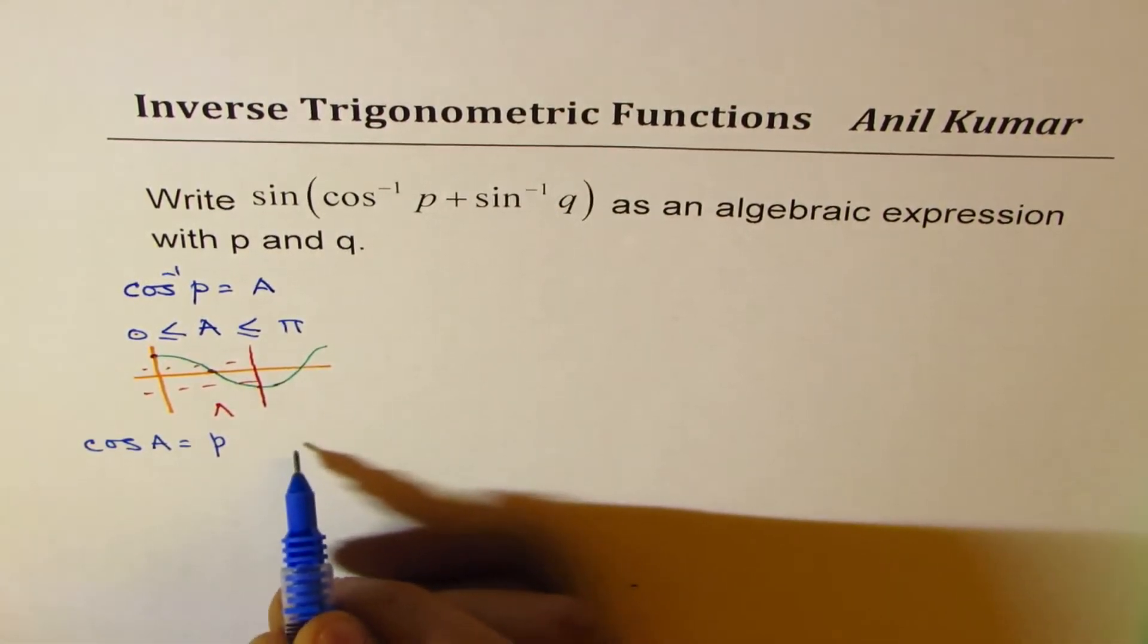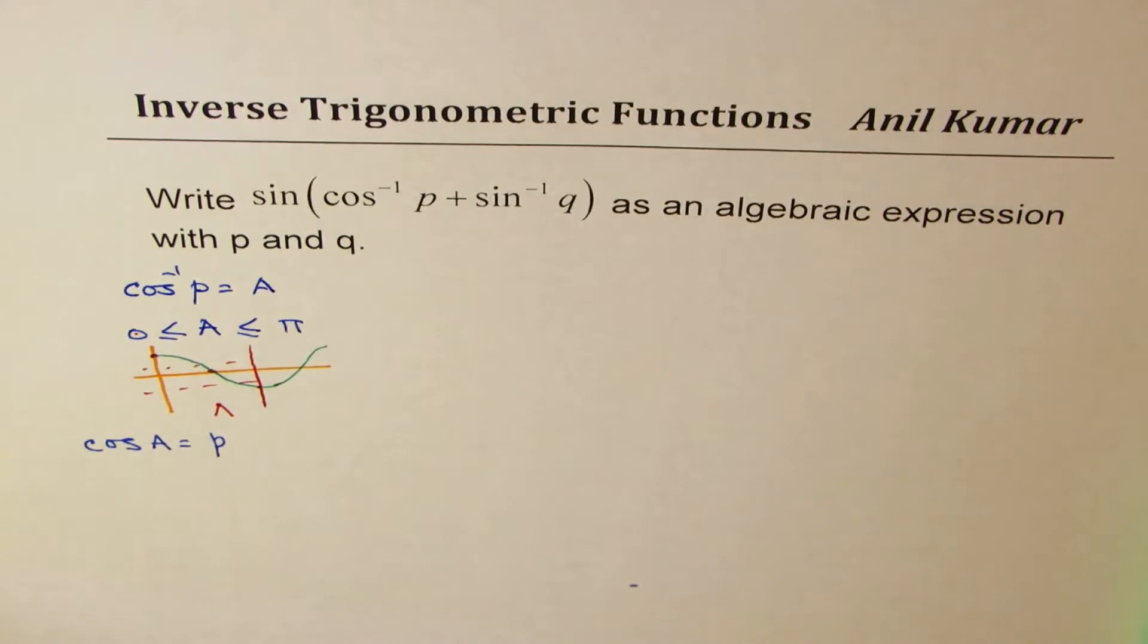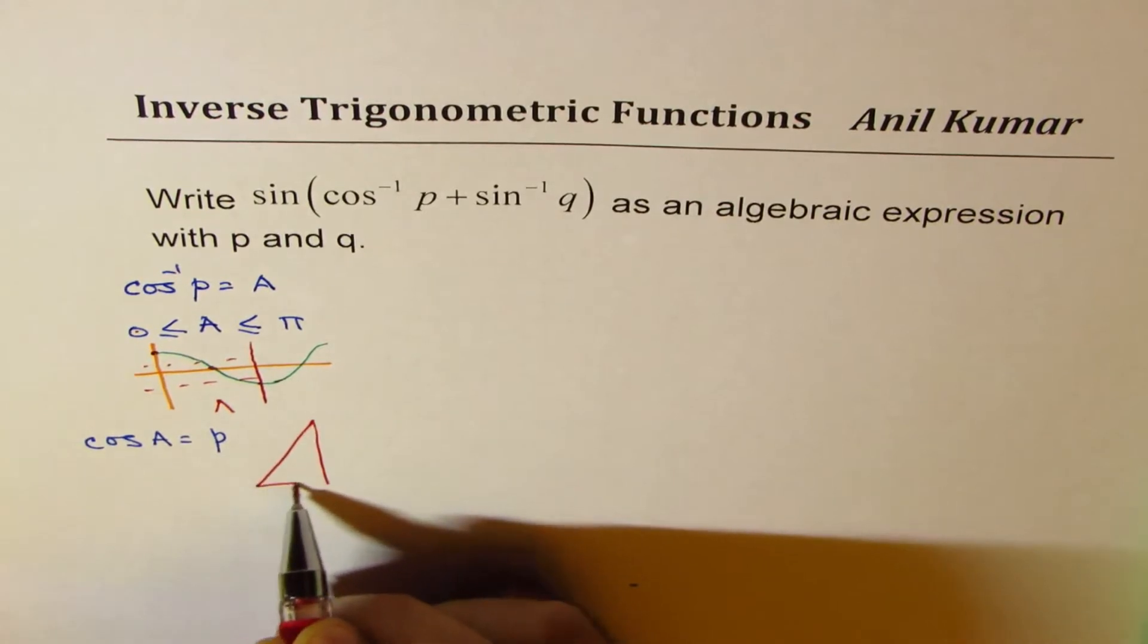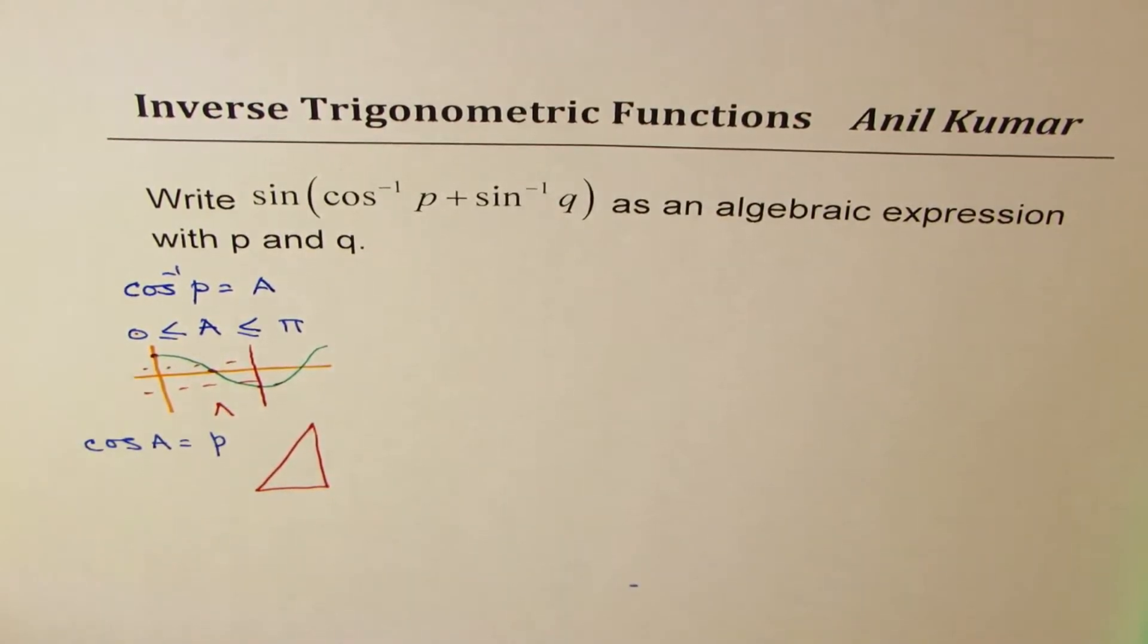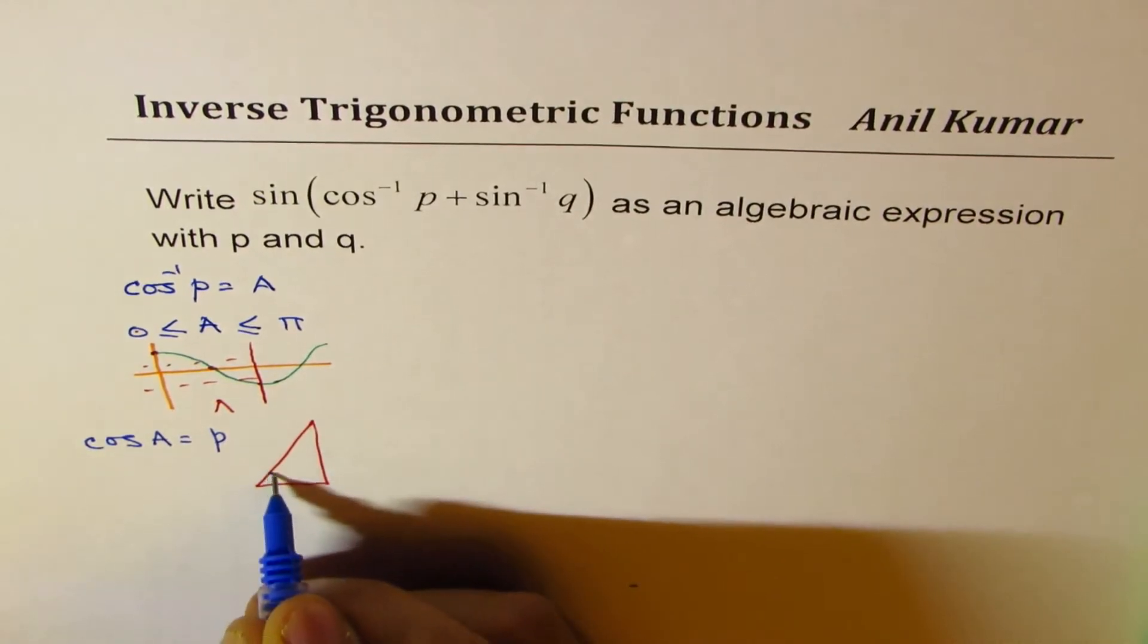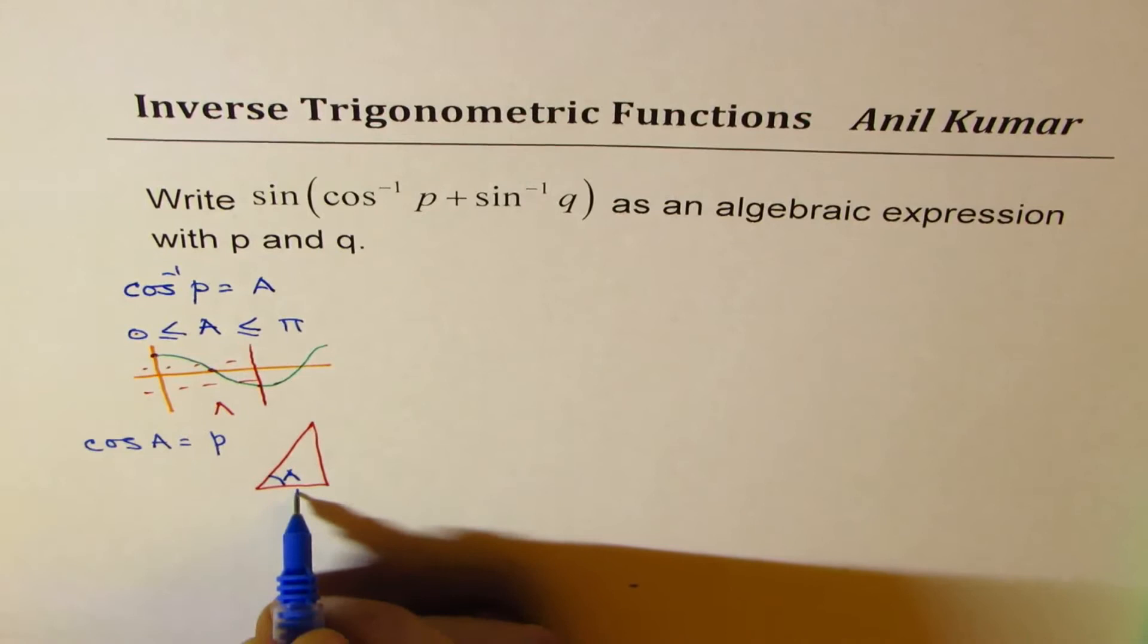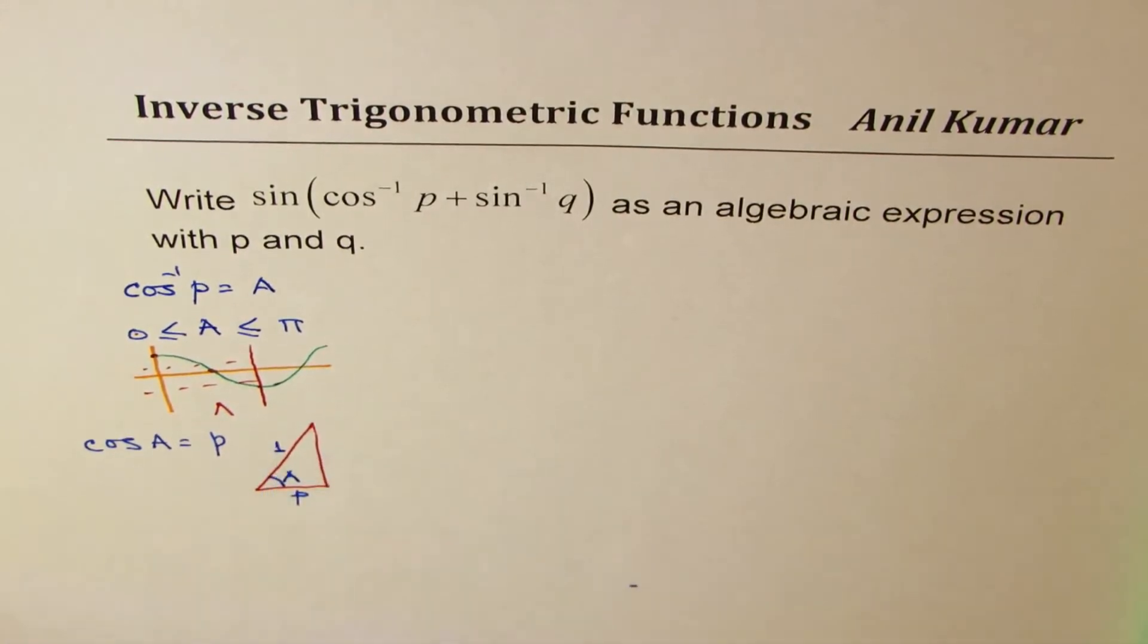In that case, I can make a triangle. Let's make a triangle where cos A is p. Let's say this triangle, where the angle A, and when we say cos A is p, it means adjacent side is p and hypotenuse is 1.